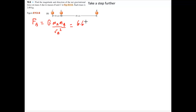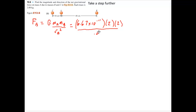We know that 6.67 times 10 to the negative 11th is Newton's gravitational constant. The mass of A is 2 and the mass of B is 2. The distance between A and B is 0.4 meters. Don't forget to square that. Plugging everything into the calculator gives 1.668 times 10 to the negative 9 newtons — the force is pretty small.